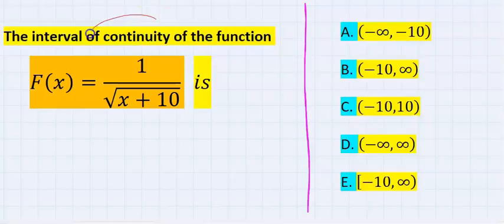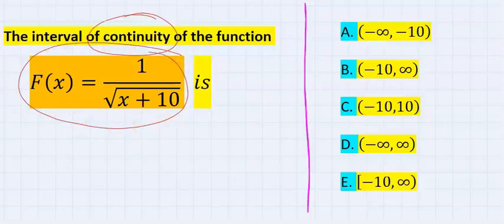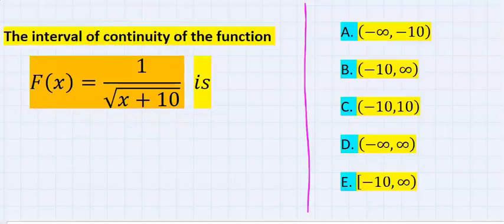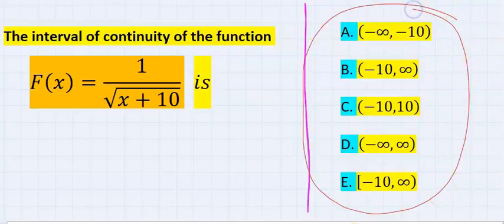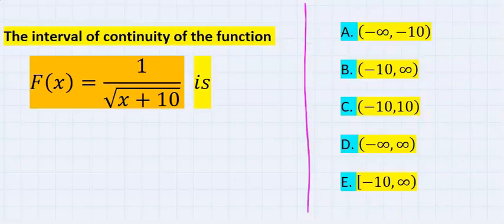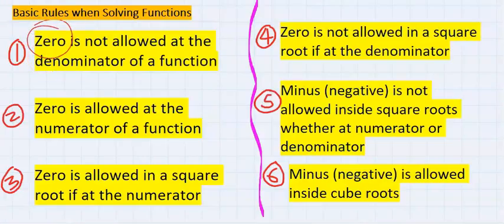The interval of continuity of this function is what we'll solve. We are going to choose from one of these options. To solve this, let's consider some basic rules. Zero is not allowed at the denominator of a function.